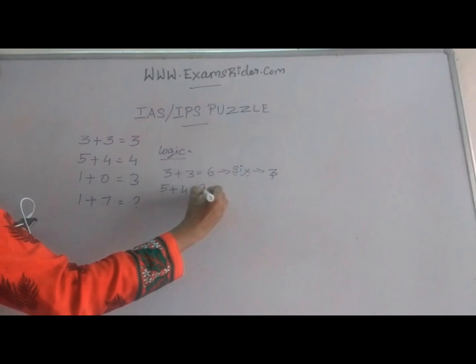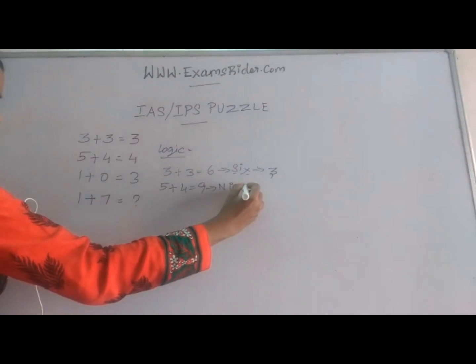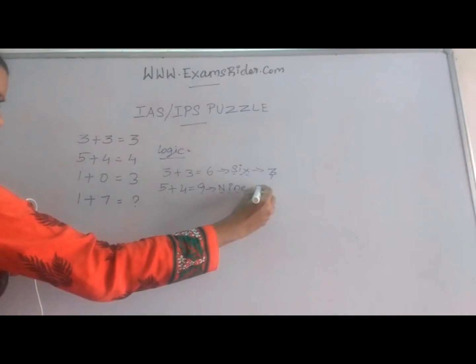5 plus 4 is equal to 9. So number of letters in the word is 4.